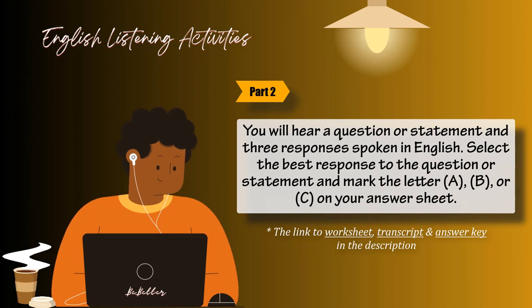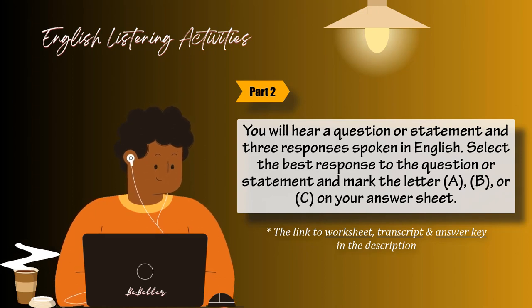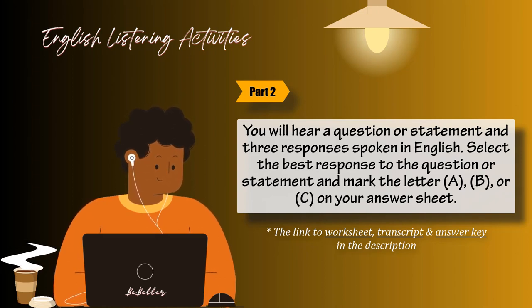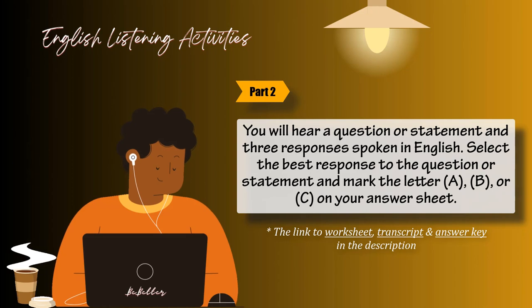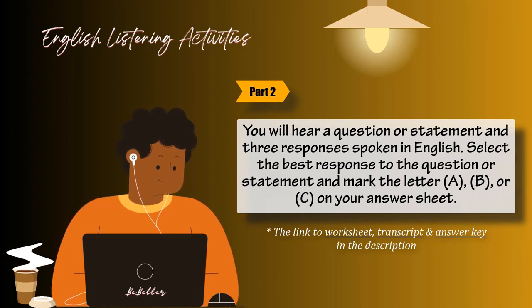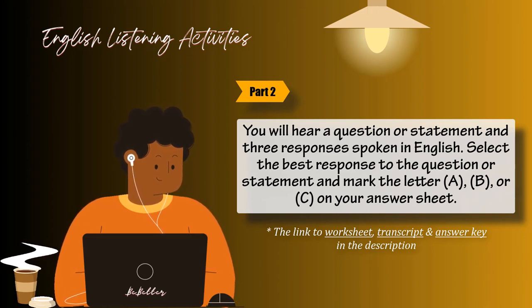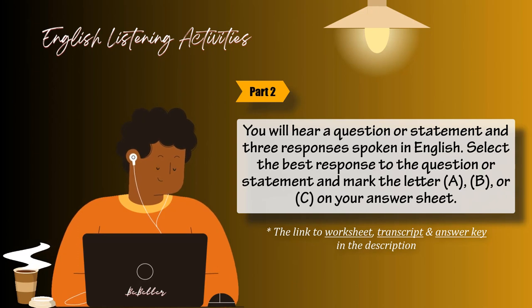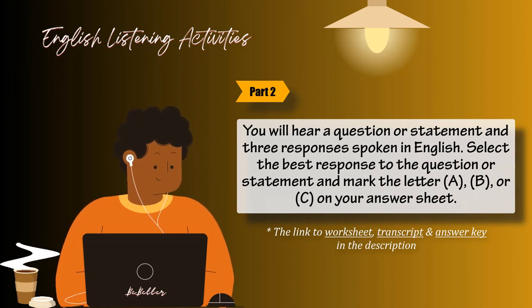Number 34. Don't you think we should wait to find out from our government authority? A: It's right across from here. B: It's very light. C: Perhaps you are correct.